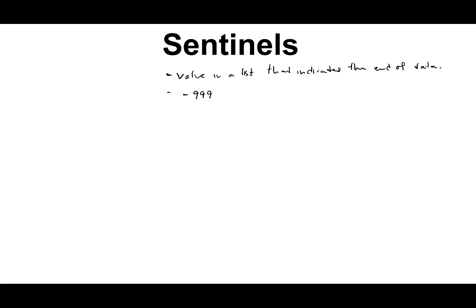Another example would be if you're getting ages from people. They'd enter age 1, age 2, age 3, and then you could use negative 1 for the user to indicate they're done entering ages. Sentinels are often used when you're getting data from the user and you don't know how many values will be entered. Let's look at an example of how this would be applied in a program.